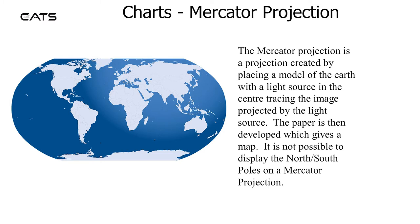Charts — Mercator projection. The Mercator projection is a projection created by placing a model of the earth with a light source in the centre, tracing the image projected by the light source. The paper is then developed which gives a map. It is not possible to display the north-south poles on the Mercator projection.